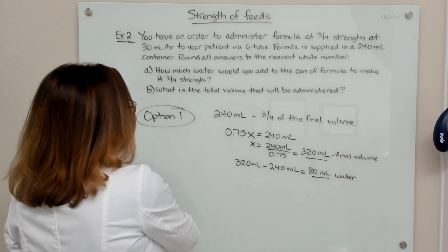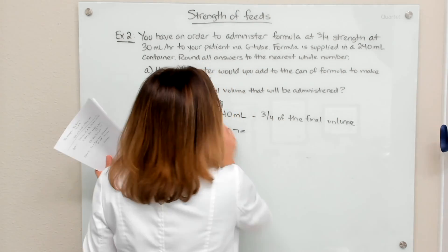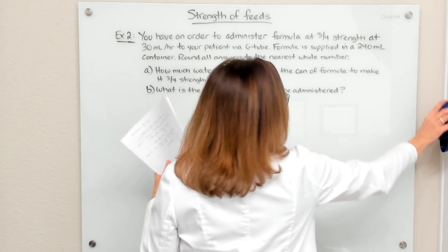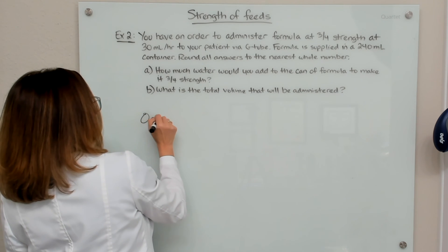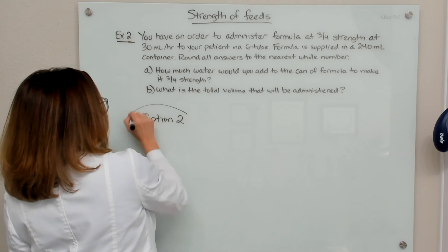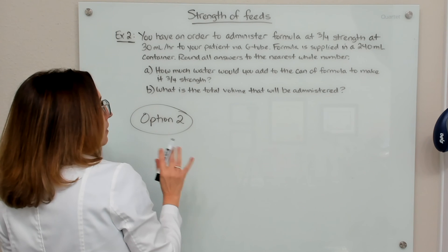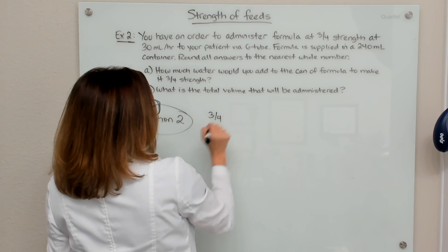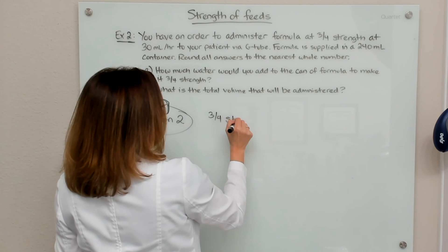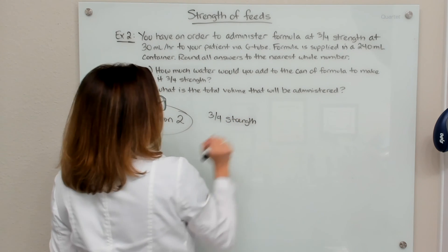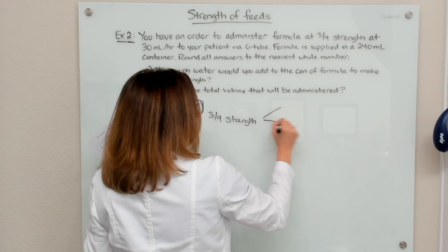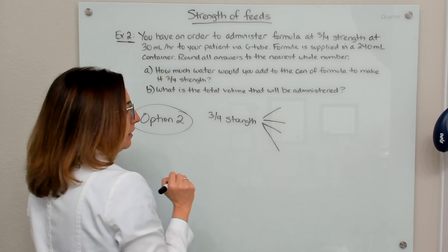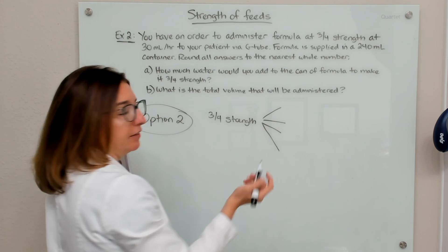All right, let's work through this same problem using option number two. So with option number two, if we look at our order, and they're telling us to administer this at three quarters strength, that means that we have three parts which are going to be formula and one part that's going to be water.